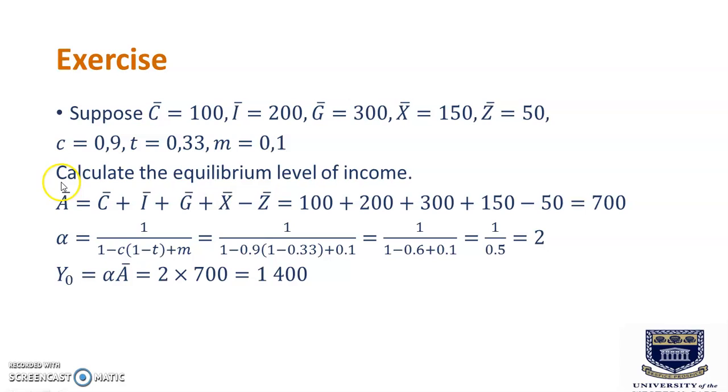So what do we have? Firstly, we are going to calculate our total autonomous spending components. Now remember, everything with a bar is autonomous. So here we have C-bar, I-bar, G-bar plus X-bar, and remember imports is a leakage which is why we have to say minus Z-bar. I have got these values from the values given at the start of the question. So adding all these components, I'm going to get 700.